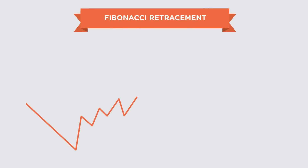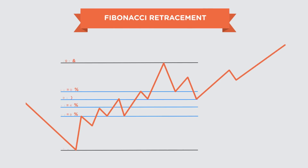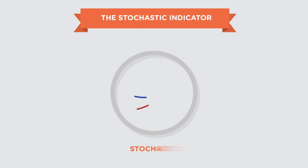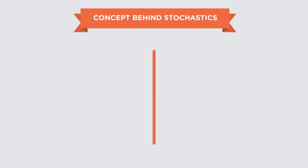In the previous lesson we learned about the Fibonacci grid and how it helps in estimating retracements. In this lesson we'll explore another indicator called the stochastic.